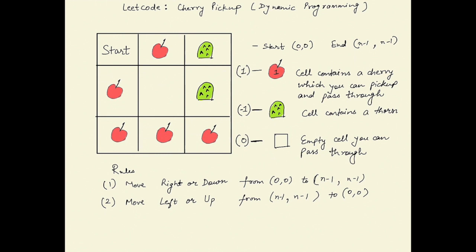You are given an n×n grid where indices are from 0 to n-1 for rows and columns. Each element of the grid is either 0, -1, or 1. A 0 represents an empty cell you can pass through. A -1 means that entry contains a thorn — it's a blocking path and you can't enter that cell. A 1 means that cell contains a cherry; you can pick it up, and after picking it up the cell becomes empty, returning to state 0.